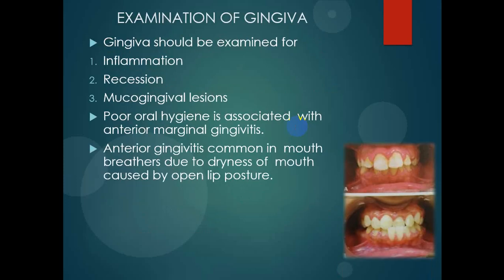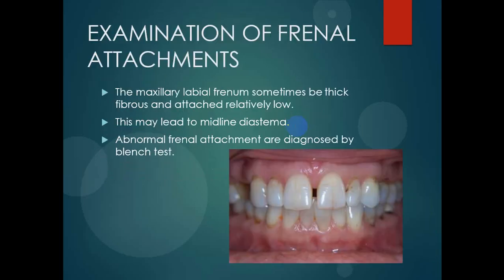Examination of the gingiva: the gingiva should be examined for inflammation, recession, muco-gingival lesions, and poor oral hygiene, which is associated with anterior marginal gingivitis. Anterior gingivitis is common in mouth breathers due to dryness of the mouth caused by open lip postures. If there is a hypotonic lip or open bite, in that condition also there are chances of anterior gingivitis. So when we observe the gingiva, we examine for inflammation, recession, muco-gingival lesions, and whether any gingivitis is generalized or localized.